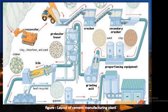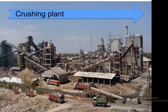In the overall flow diagram of the manufacturing process, an excavator puts limestone into the preheater tower, then a primary crusher and secondary crusher reduce it to smaller particles. The crushed material goes to proportioning equipment where sand and clay are mixed with limestone. This mixture is sent to the grinding mill, then to the preheater tower, then to the kiln where high temperature forms clinkers. Gypsum is added to the clinkers, followed by granulating and packing.